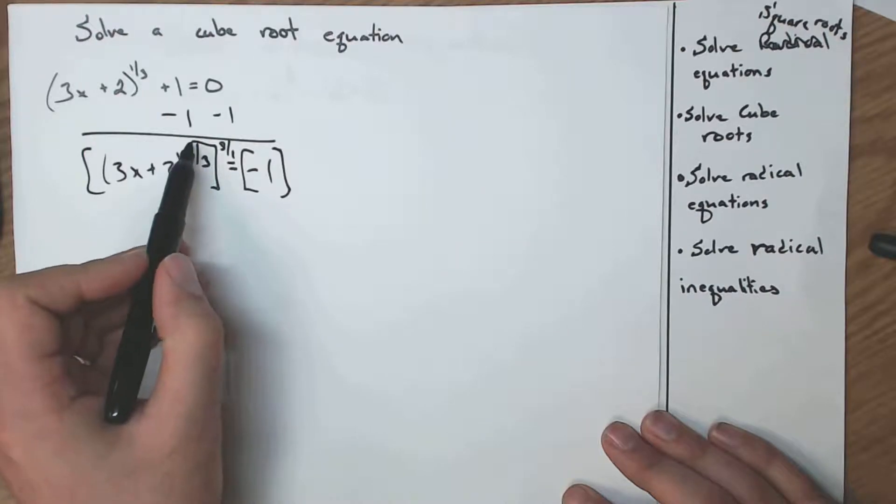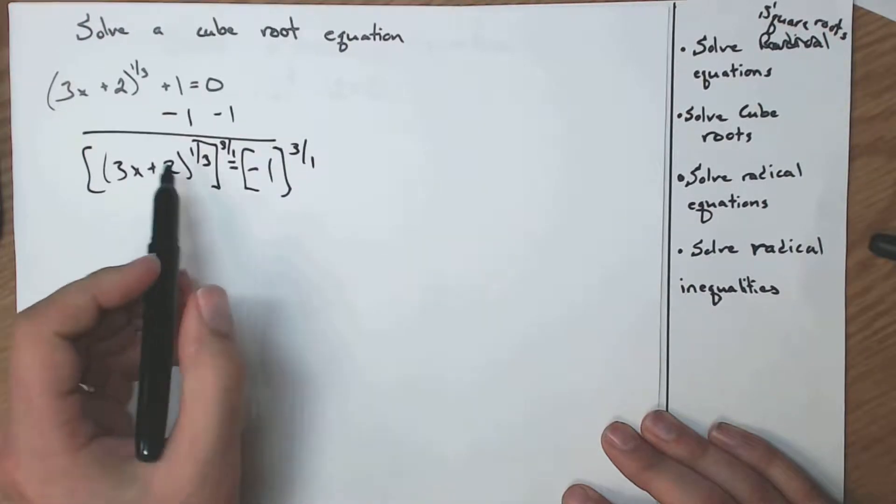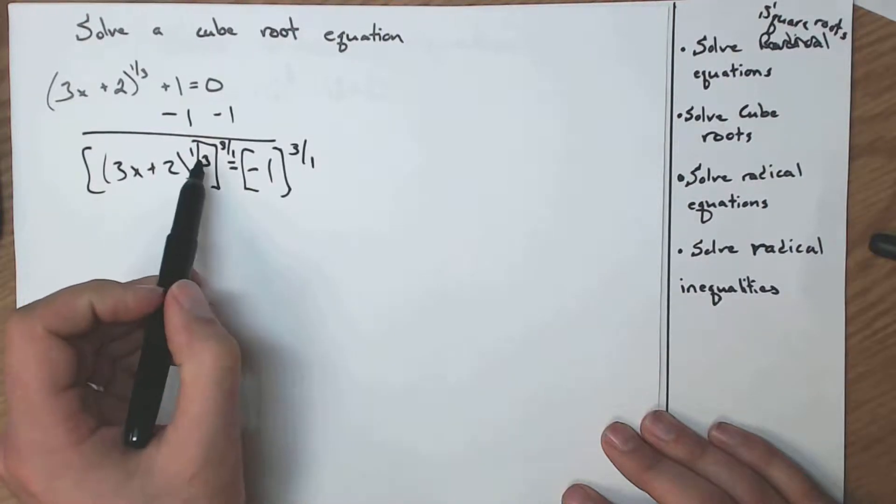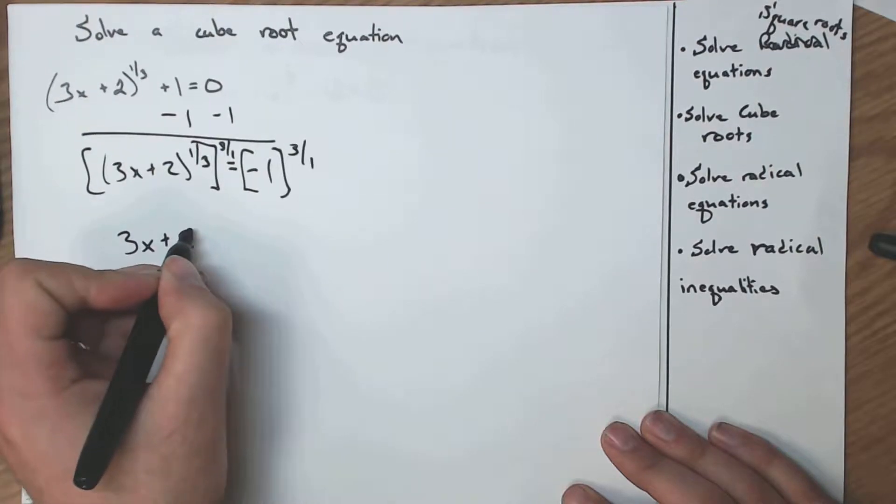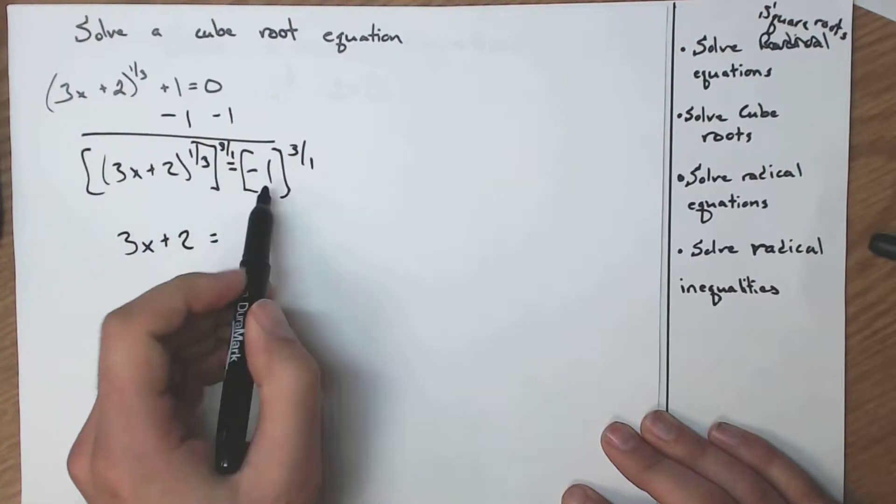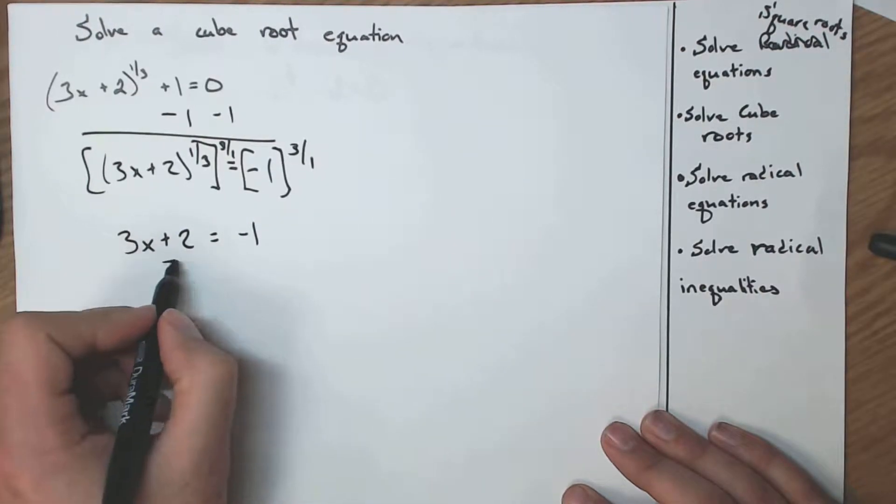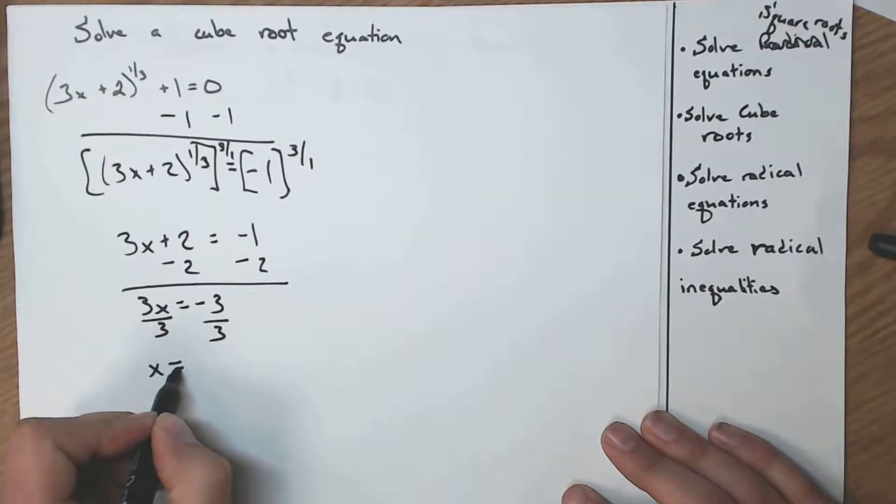And I do that by multiplying by, or sorry, raising it to its reciprocal. I have an exponent of 1 third. I'm going to raise it to the 3 over 1. When I have an exponent raised to another exponent, what do I do? Well, it's power of powers, and I multiply them. What's 1 third times 3 over 1? Well, that's just a 1. So I have 3x plus 2 raised to the 1st. And then I have a negative 1 cubed. That's just negative 1. So now I subtract the 2. 3x equals negative 3. Divide by 3. And x is negative 1.